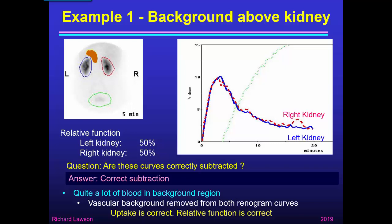In this case we had a background region with quite a lot of blood in it. Above the kidney there are vascular structures like the spleen and the aorta. So we have removed vascular background from both renogram curves, and this background region has got the right amount of blood to correspond to these kidneys. So the uptake is correct, which means the relative function is correct — 50% to each kidney as we suspected from the beginning.